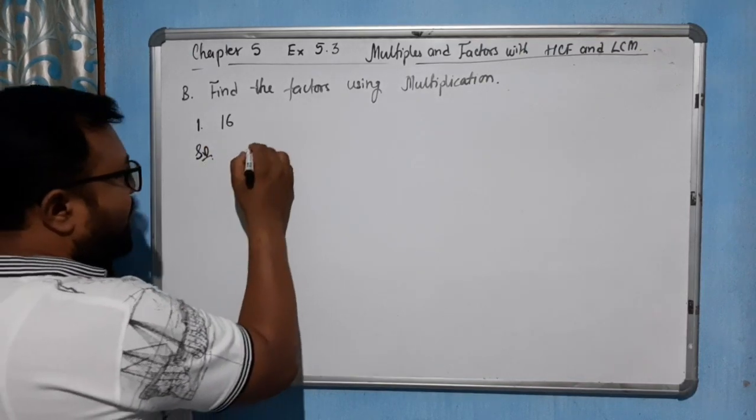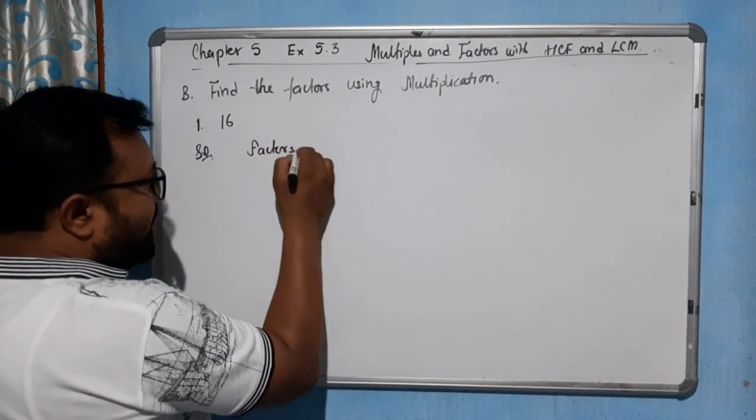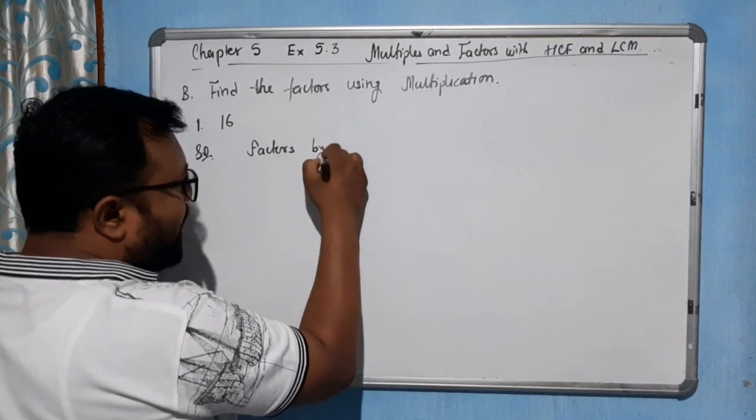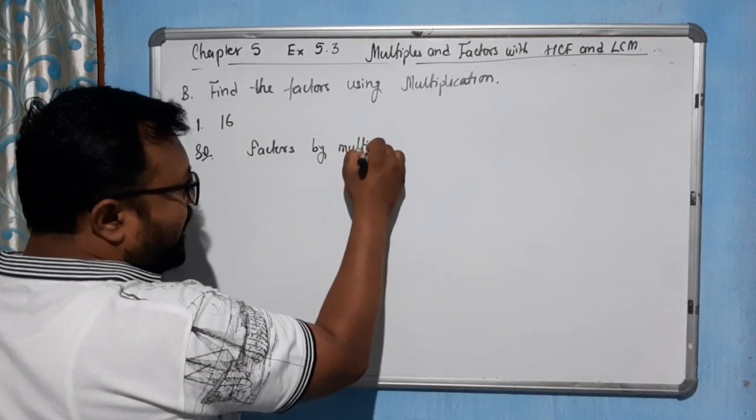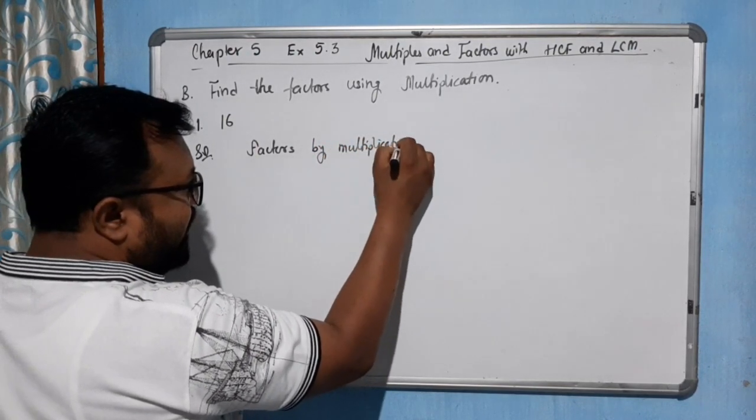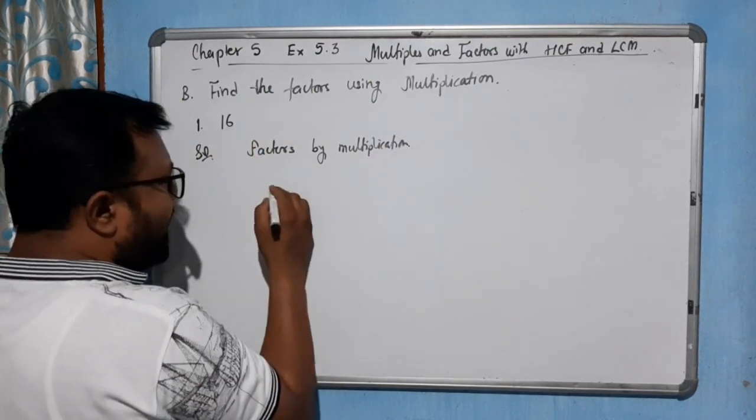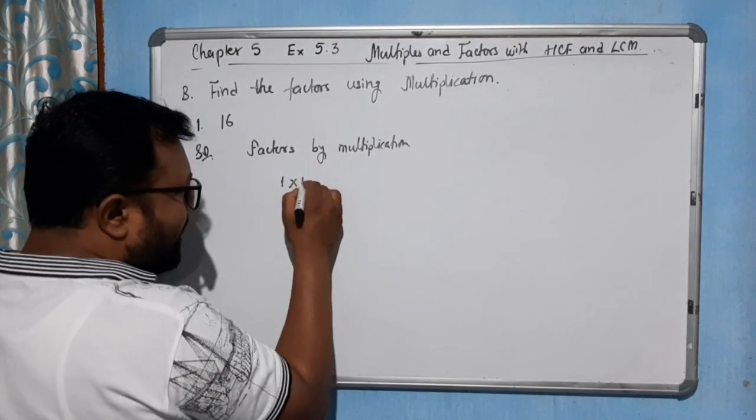Solution: factors by multiplication. Simply we will give the heading like this. Now first we will try with 1: 1 into 16 gives you 16.